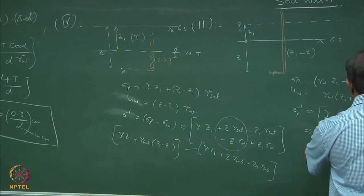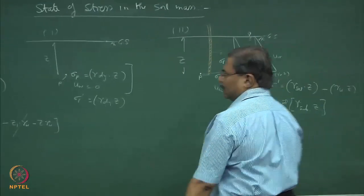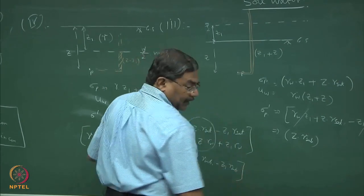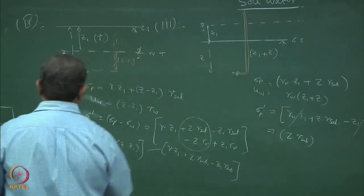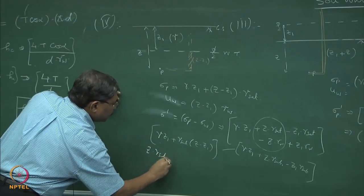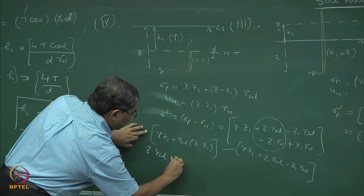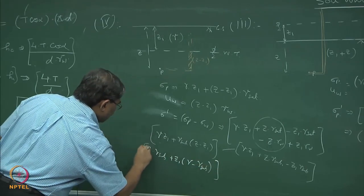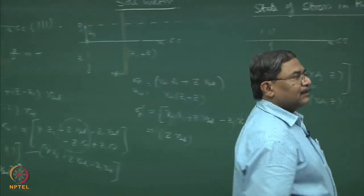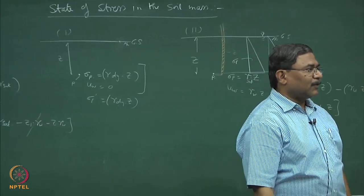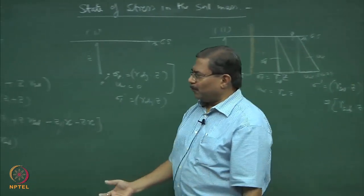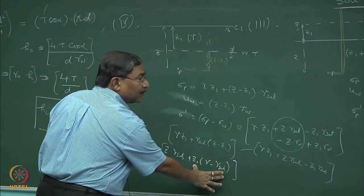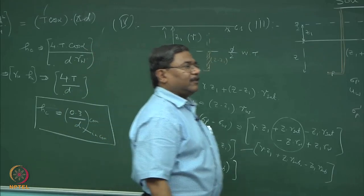What is your intuitive feeling? z·γ_submerged compared to z·γ_submerged — and here what has happened? You have z·γ_submerged as before, but now we can write this as z·γ_submerged plus z1·(γ minus γ_submerged). Effective stresses have increased at the given point.